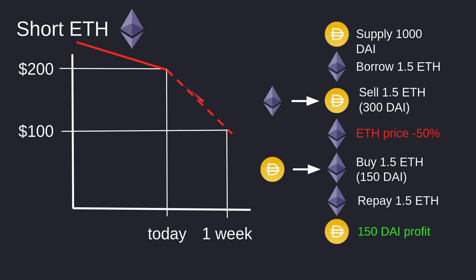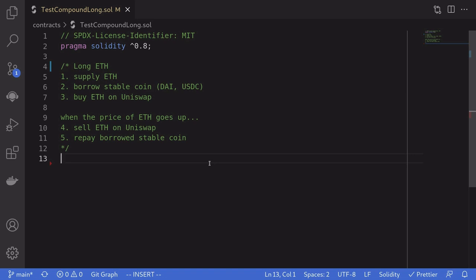That is how you make a profit by predicting that the price of ETH is going to go down. You borrow ETH and then sell it immediately. When the price of ETH indeed goes down, you buy back the ETH, repay the ETH that you borrowed, and you're left with profit. Let's now take a look at the code — how would we long ETH on Compound using Solidity?